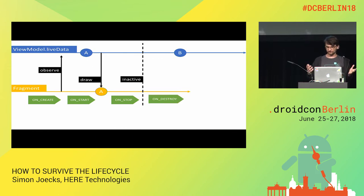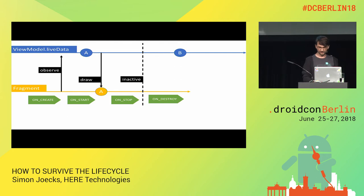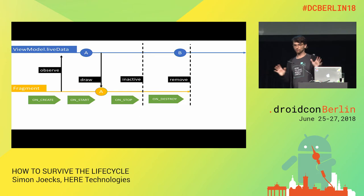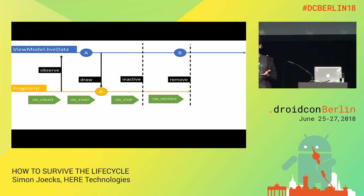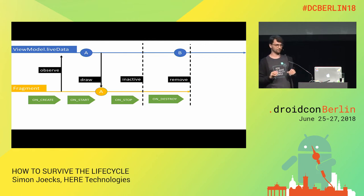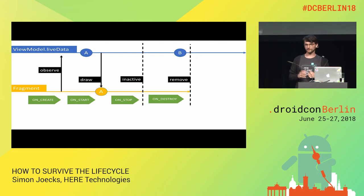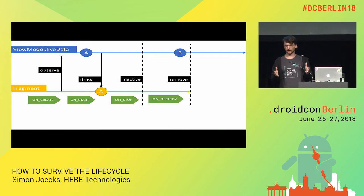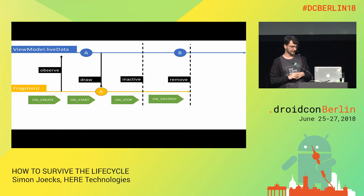Then the fragment is going to be destroyed, all the resources are removed, and eventually the observer removes itself automatically. So no more boilerplate code to go to onDestroy and unregister your observer — it's a very clean setup. In our applications, it's helped us a lot to have a very simple way to describe what is happening in our application.